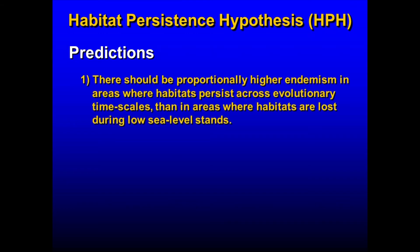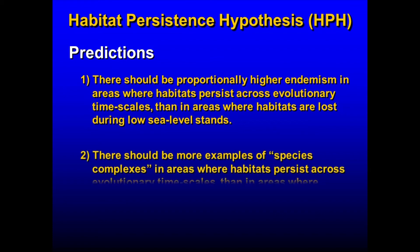We can come up with seven specific predictions this hypothesis posits. The first is that there should be proportionally higher endemism in areas where habitats persist across evolutionary timescales than in areas where habitats are lost during low sea level stands. Rare colonizers, which might be the genesis of a new divergent species, are more likely to be found in areas where their habitat persists over evolutionary timescales.